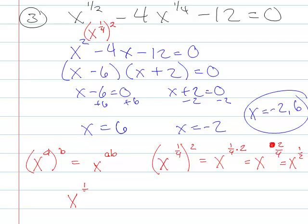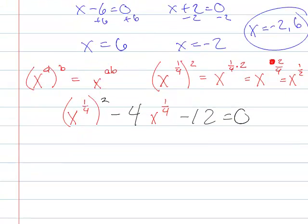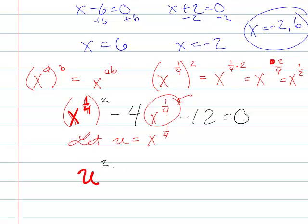So what we really have now is x to the 1 4th squared minus 4 x to the 1 4th minus 12 is 0. So what we want to do is we want to substitute. We want to let u equal to that middle term x to the 1 4th. So if u is x to the 1 4th, then that means everywhere I have an x to the 1 4th, I'm going to put a u squared minus 4. So instead of x to the 1 4th, I'm going to write u, and then minus 12 is 0.